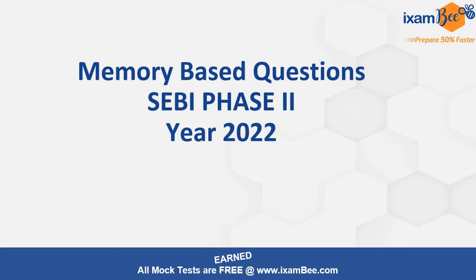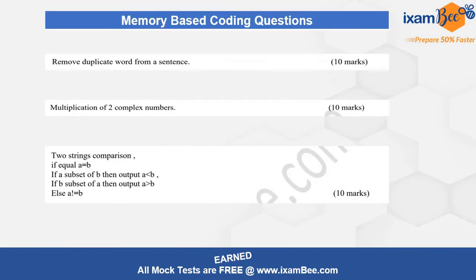Now let's begin with the questions of the coding round. This particular round happens in phase 2 where you actually have to code certain questions, and those questions will not give you any choice.